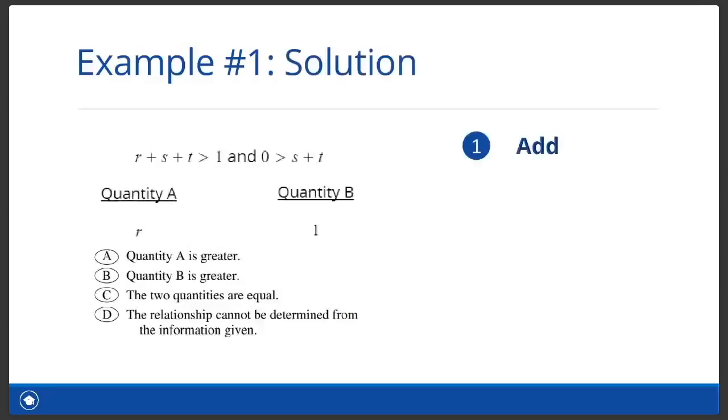Since you see inequalities in this question, as we mentioned before, you should consider using the add strategy to simplify this question. So what are we adding? Glad you asked. Well, we are going to add the two inequalities together by aligning them vertically and then adding them straight down just like how we first learned addition as kids. As you see here, when we add these two inequalities together, we end up with one inequality instead of two. R plus S plus T is greater than S plus T plus one. So that's a lot better. We went from having two inequalities to now having only one inequality by using the add strategy.